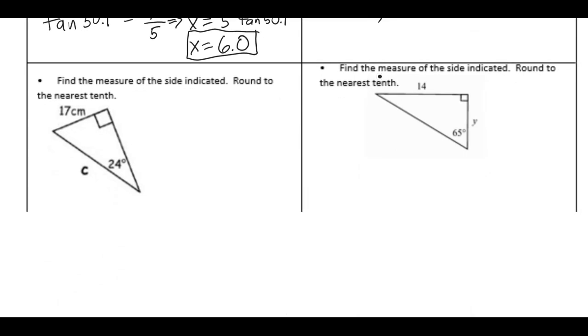Alright. Last example here. Find the measure of the side indicated. Round to the nearest tenth. Well, that was funny. I saw the c and the n and somehow my brain went to cent. So from the perspective of the 24 degrees we have opposite and we need hypotenuse. That's sine.